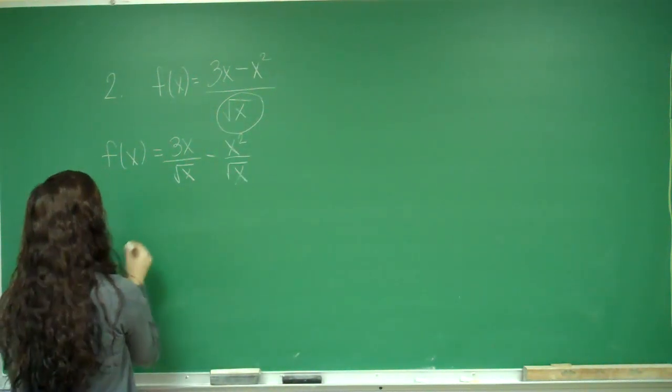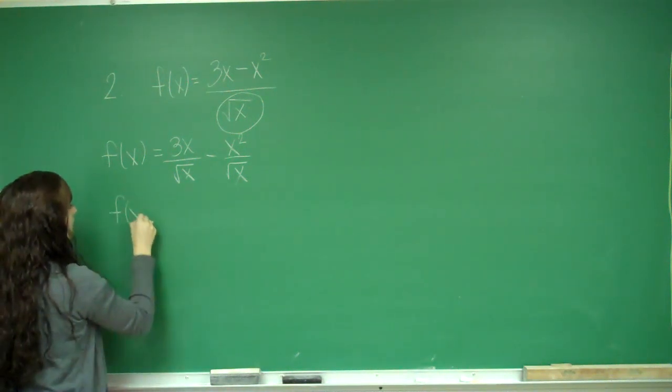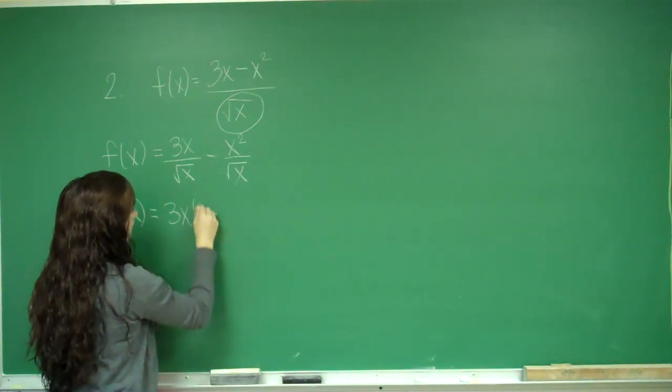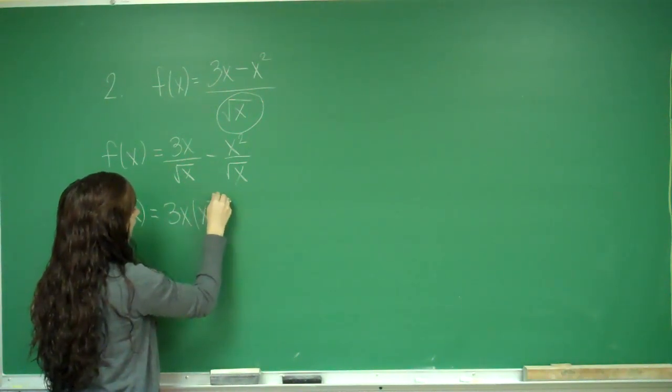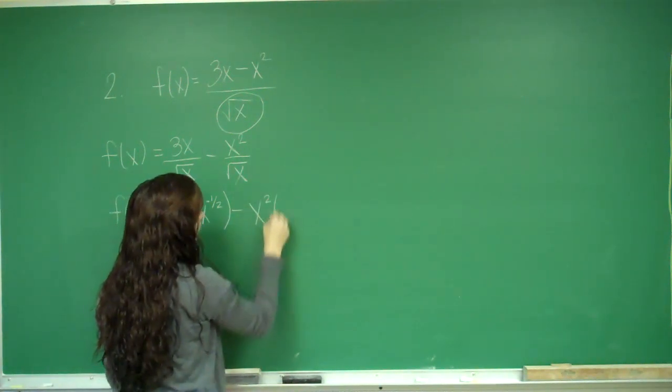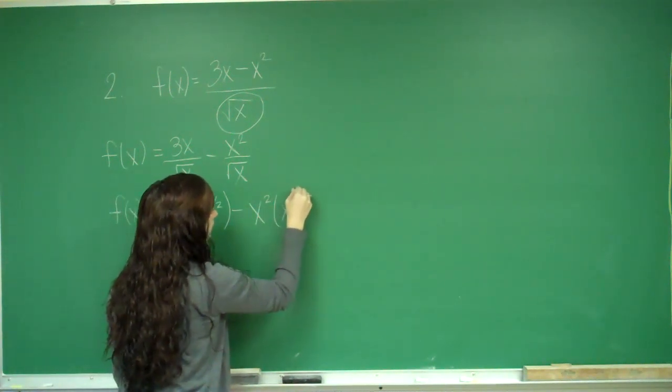Now I'm going to rewrite this again. That's f of x equals 3x. And I'm going to change this x to x to the negative one half minus x squared times x to the negative one half.